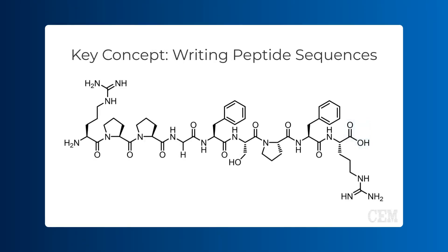When it comes to transcribing peptide sequences, the process is fairly simple. Peptide sequences are written from the N-terminus to the C-terminus, reflecting the natural direction of peptide synthesis. Each amino acid is represented by either its three-letter or one-letter abbreviation, arranged in order. This standardized format ensures clarity and consistency in scientific communication. For bradykinin, we could write the sequence in either of these formats.